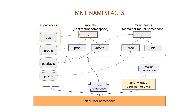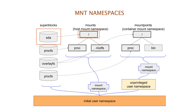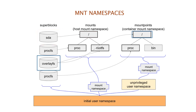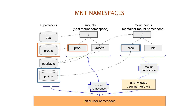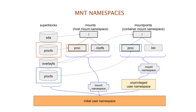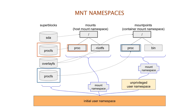In this example, you can notice that the root mount point in the host namespace points to the device sda, whereas in the container namespace it points to the device overlayfs. Similarly, the mount point /proc points to the respective /proc pseudo-file system of the mount namespaces.